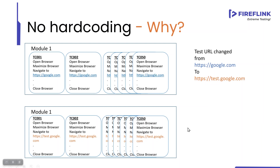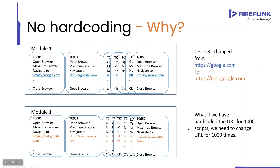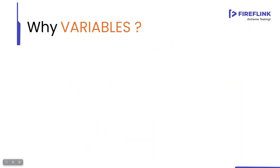What if there are 1000 scripts? How many times would I have to change the URL? I have to go to each and every individual script and change the URL 1000 times. Don't you think this is a time-consuming process? Now, let us use variables.